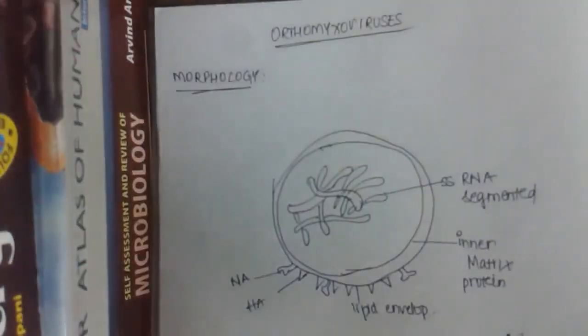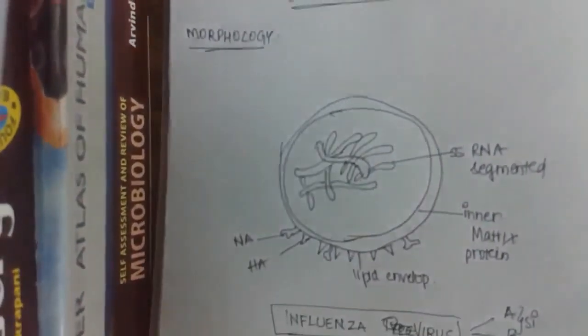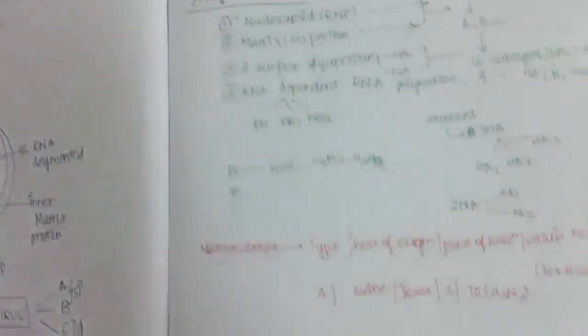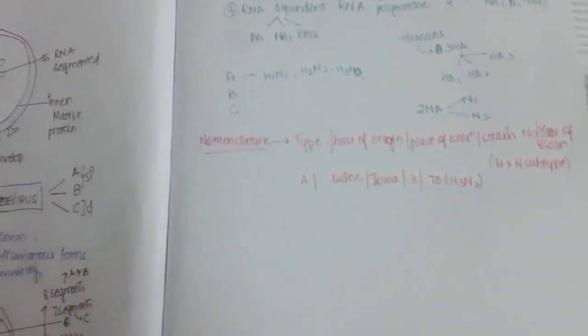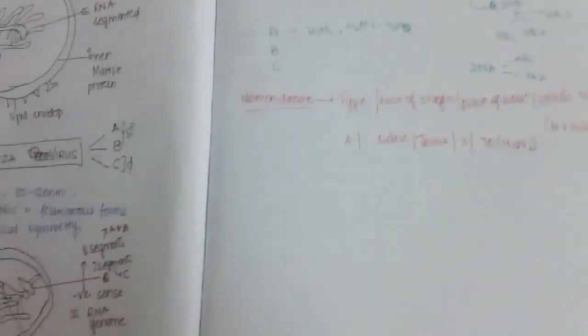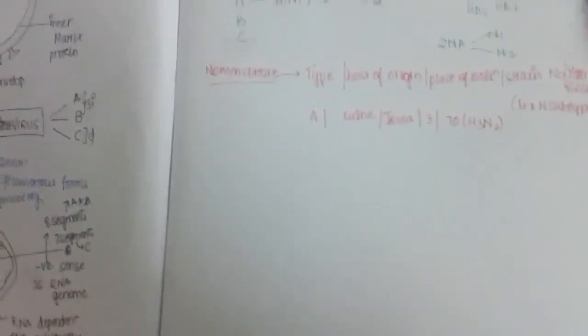In the present class we have learned about orthomyxovirus morphology, influenza virus morphology, antigenic structure of influenza, classification of influenza virus, and nomenclature of influenza virus. In our next class we will continue this topic.